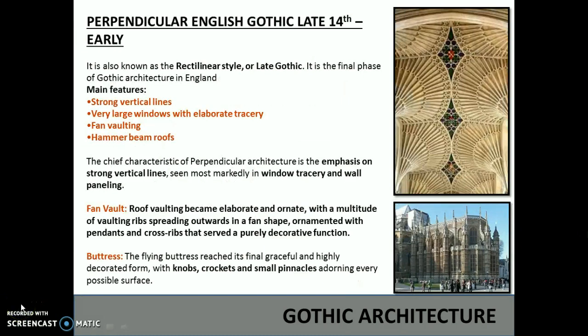Perpendicular English Gothic, also known as the rectilinear style or the late Gothic, is the final phase of Gothic architecture in England. The main features are strong vertical lines, very large windows with elaborate tracery, fan vaulting and hammer beam roofs. The chief characteristic of Perpendicular architecture is the emphasis on strong vertical lines, seen most markedly in window tracery and wall panelling.